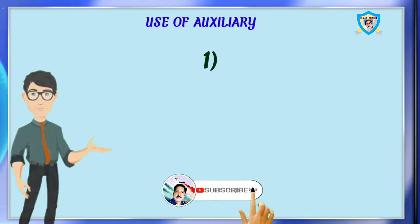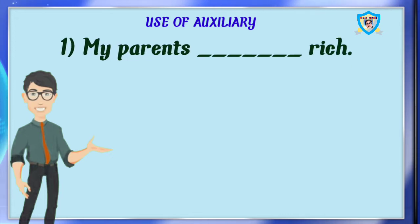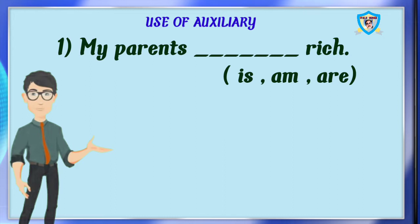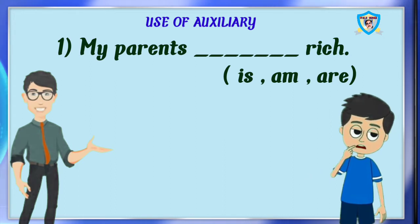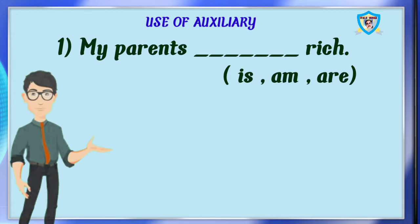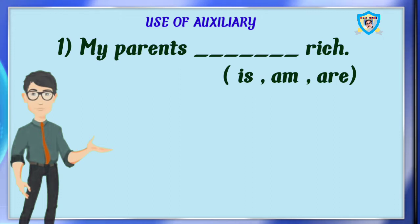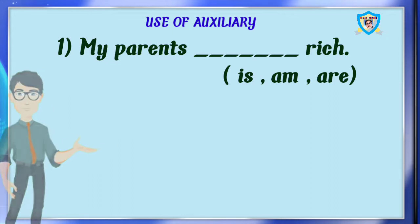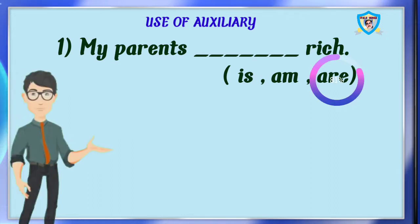The first question is: my parents dash rich. Options are is, am, are. Can you say the answer? The answer is is. No, it is wrong. Before using auxiliary we have to see the subject — whether it is singular or in plural form. Here, parents is in plural form, so we have to use are. My parents are rich.